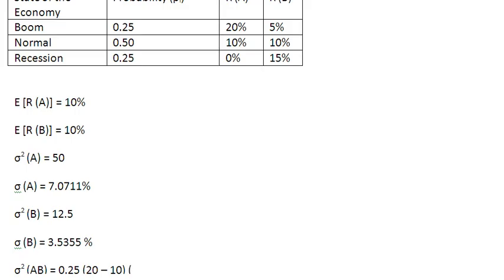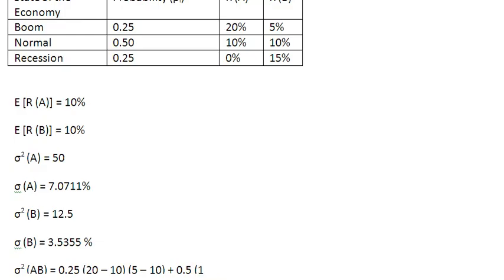Then I open another bracket to accommodate the second asset, for which the actual return during boom is 5%. From this 5% I subtract the expected return on asset B, which is 10%, and close the bracket. Then I accommodate the next probability — the normal time period — writing 0.5, and inside I write asset A's return during normal times, which is 10%.